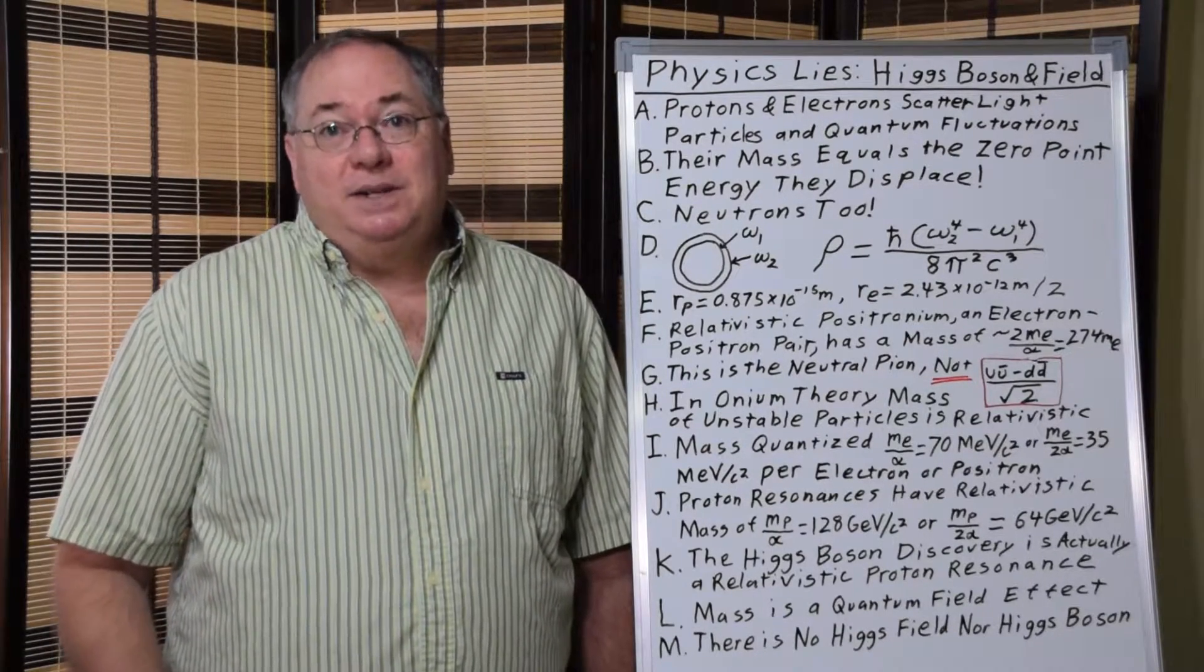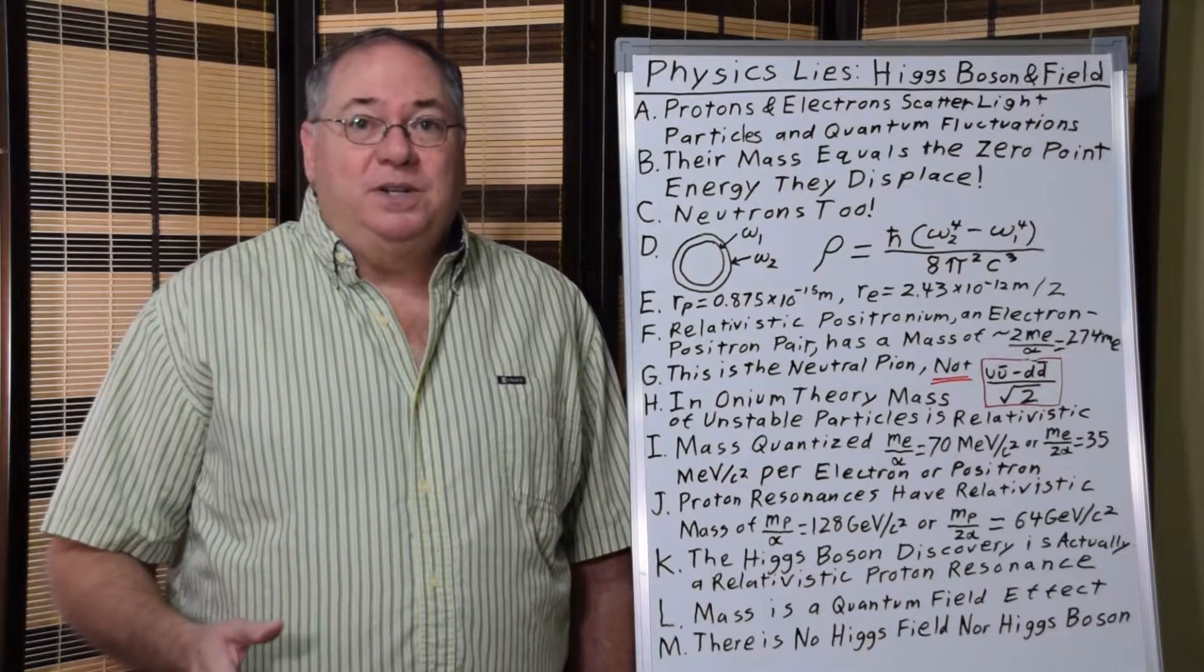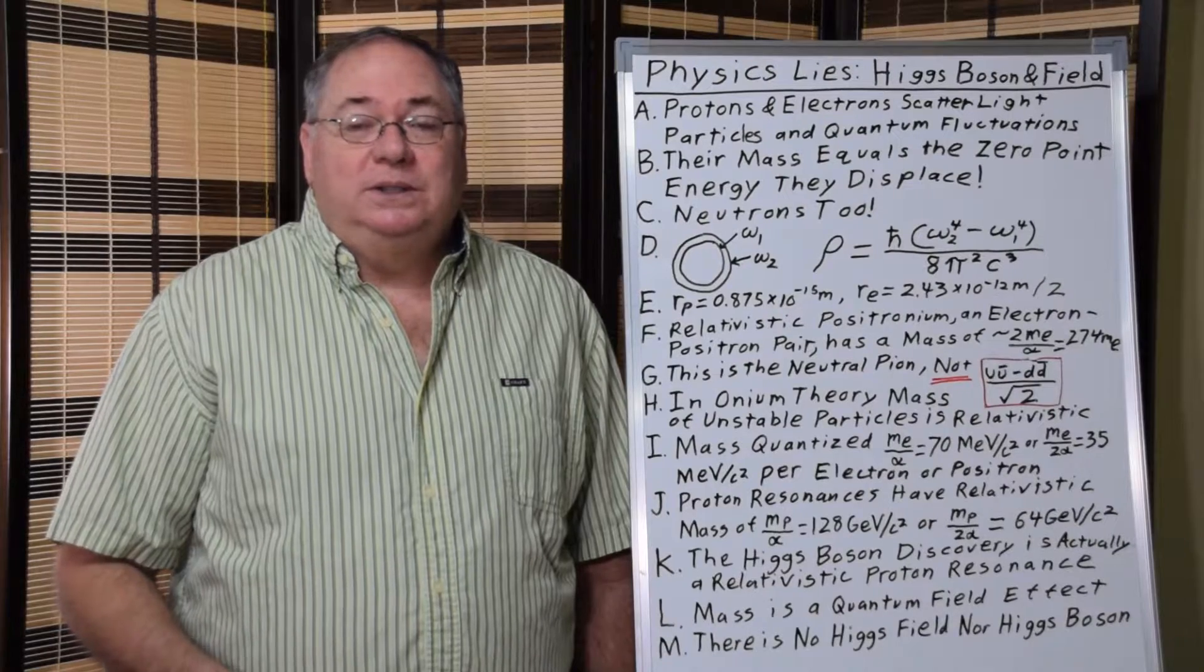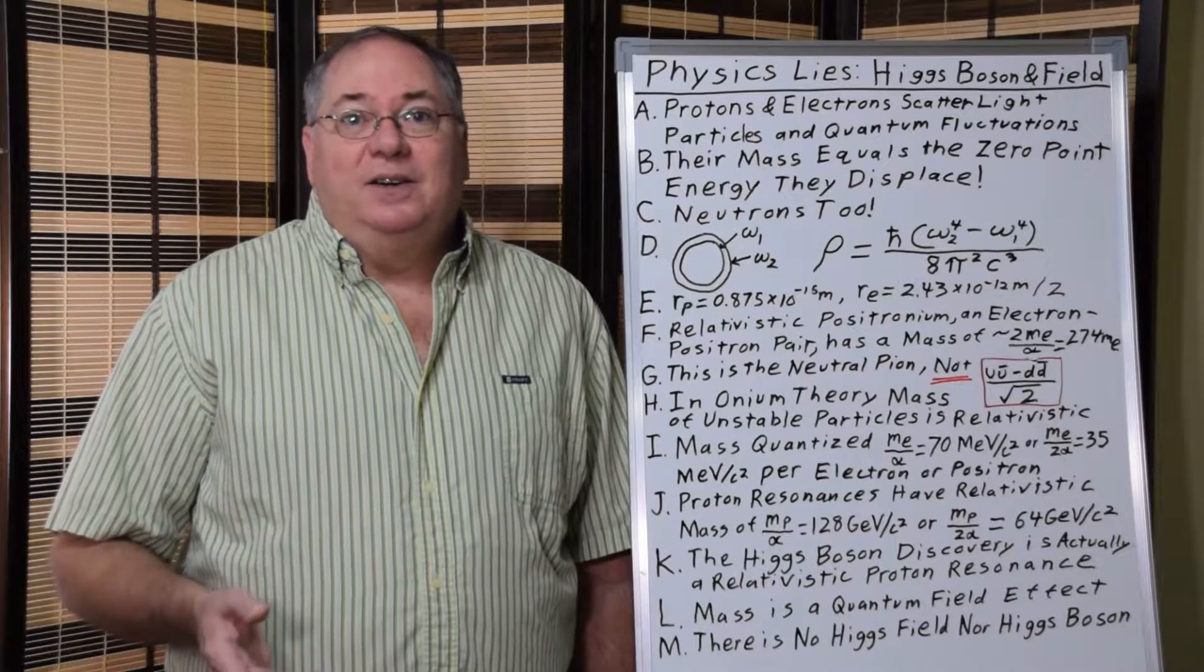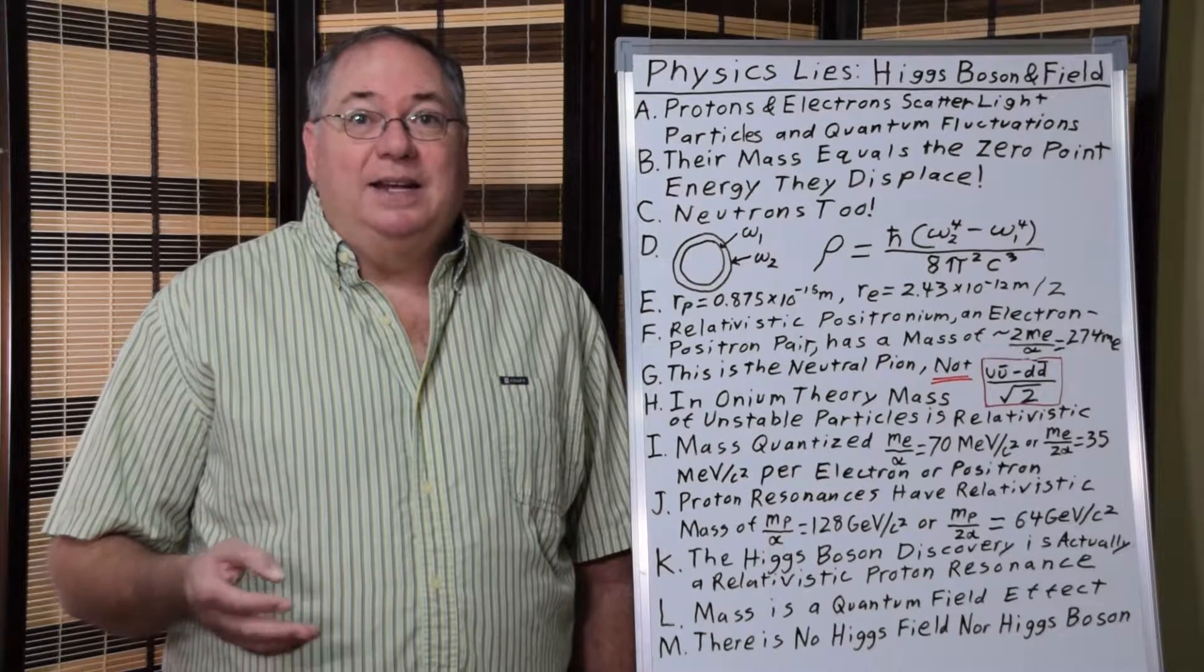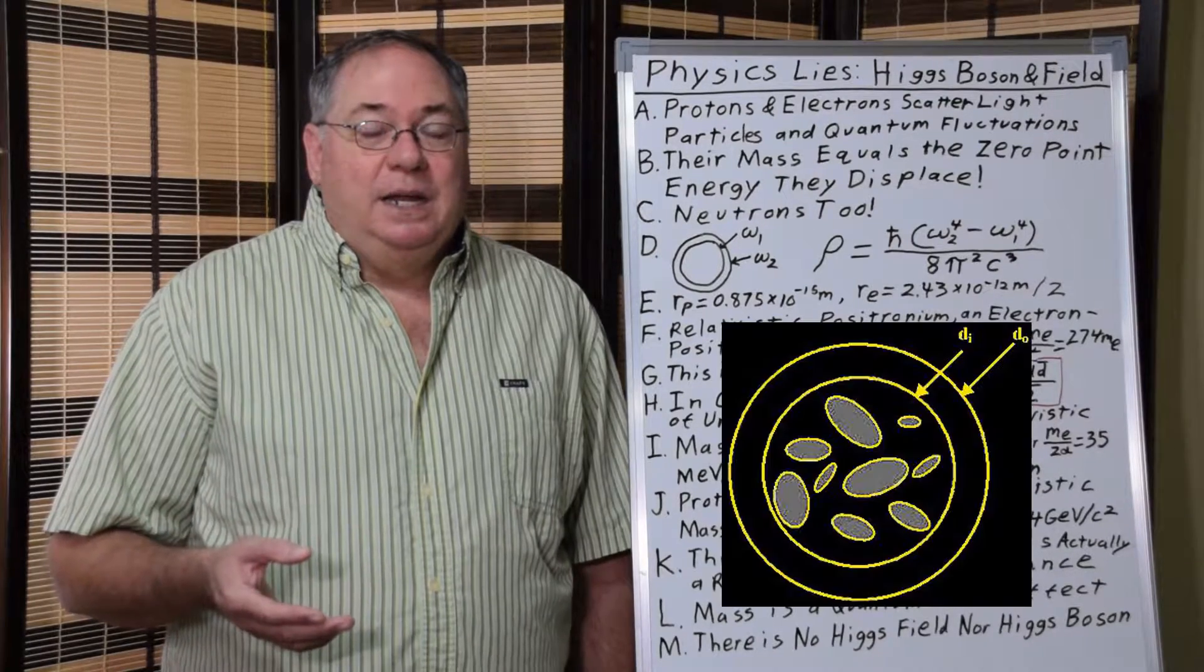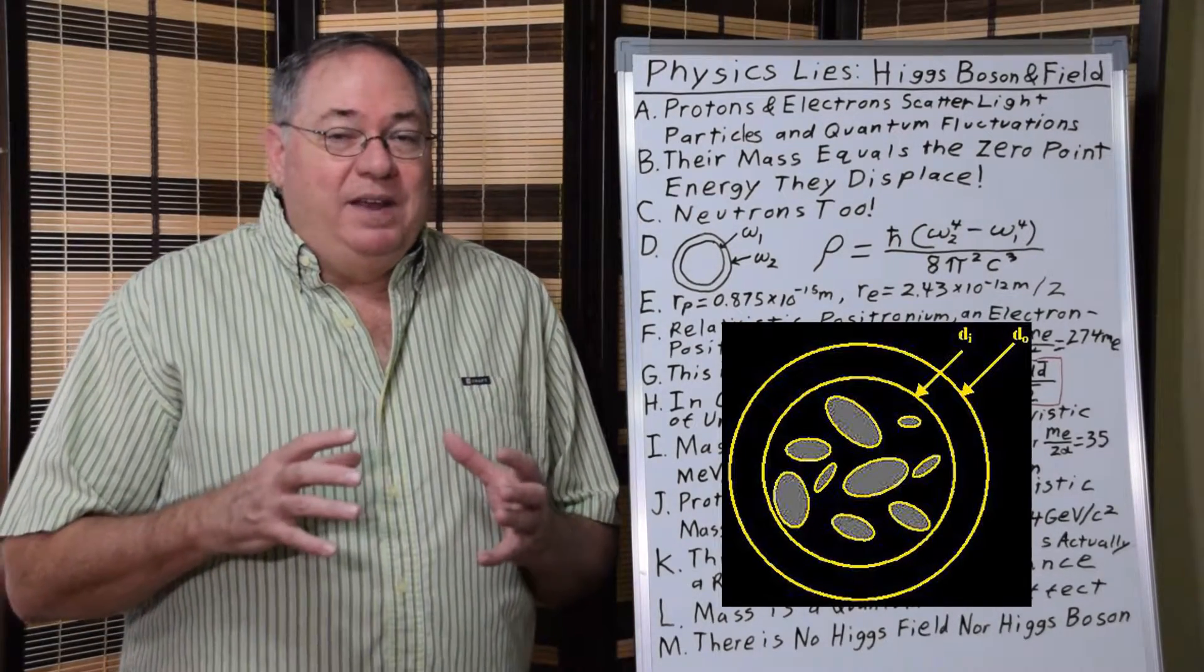And it turns out it's quite simple. Because electrons and protons scatter light and particles, which means they scatter quantum fluctuations. So they displace quantum fluctuations and they displace quantum field energy or zero point energy.